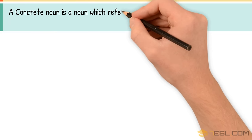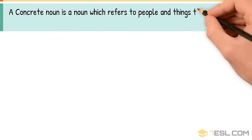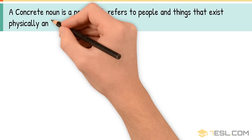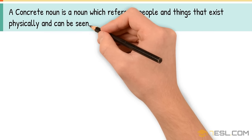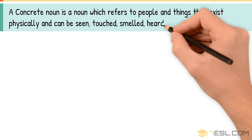Concrete Noun. A concrete noun is a noun which refers to people and things that exist physically and can be seen, touched, smelled, heard, or tasted.